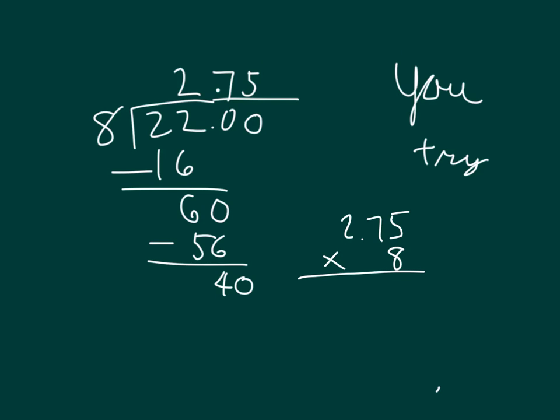8 times 5 is 40, 0 regroup of 4. 8 times 7 is 56 plus 4 is 60, 0 regroup of 6. 8 times 2 is 16 plus 6 is 22. And we place our decimal point.